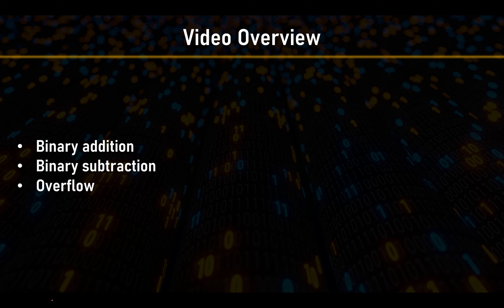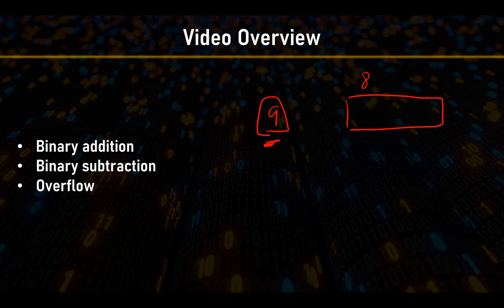Overflow occurs when we do a calculation and the answer requires more bits than the number of bits we have available. For example, if we do a sum and our answer requires nine bits, but our register or memory only has eight bits, that's going to be overflow — the answer is too big to store.